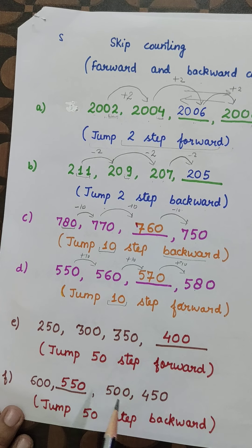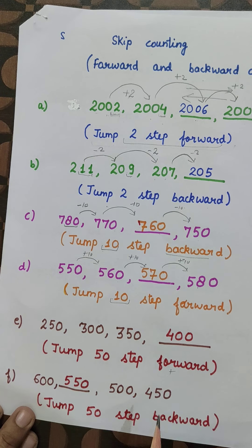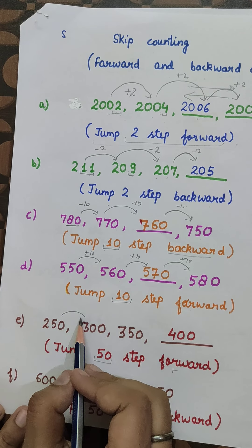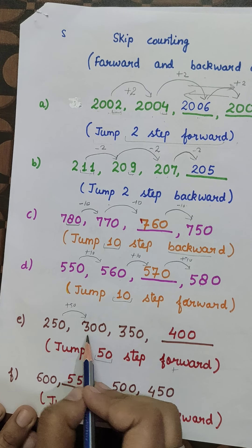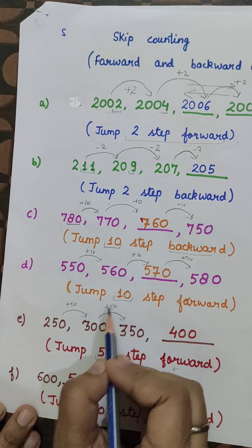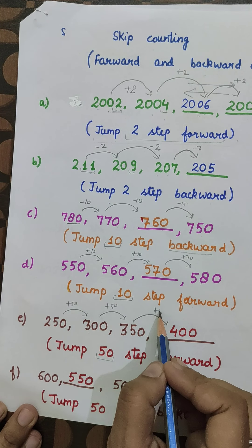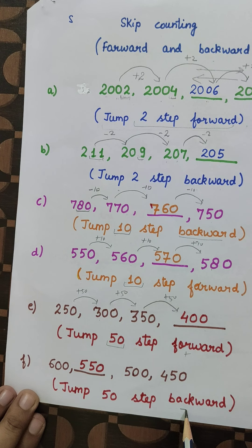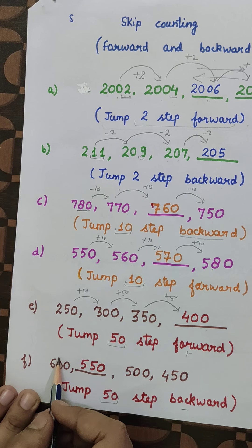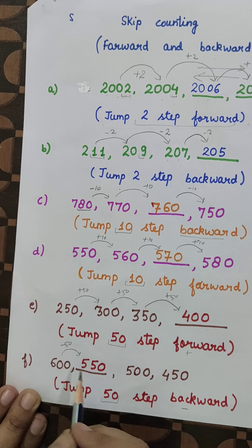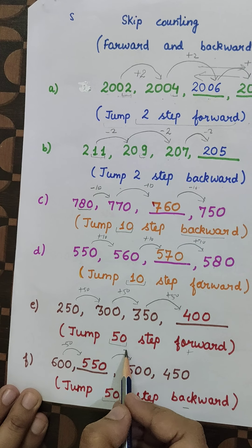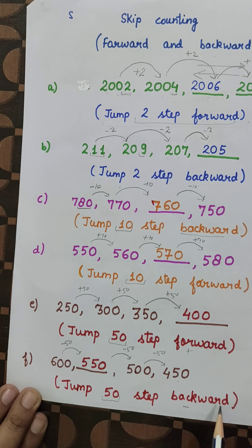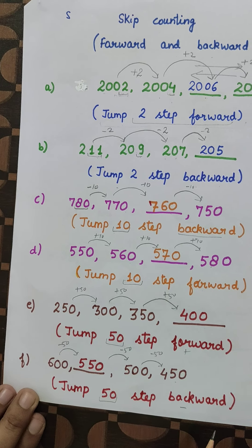Jump 50 steps forward means plus 50 each time. So: 250 plus 50 is 300, plus 50 is 350, plus 50 is 400. Our answer is correct. Jump 50 steps backward means minus 50. So: 600 minus 50 is 550, minus 50 is 500, minus 50 is 450. This is called backward counting.